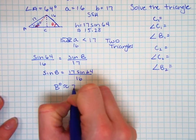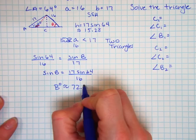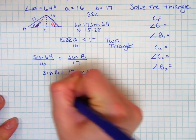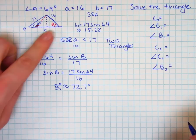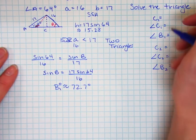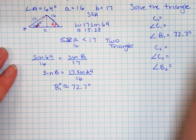And that gives me an angle B of approximately 72.7 degrees. And we'll call that B1. That's our acute angle for B. So I'll put that over B1. That's 72.7 degrees.